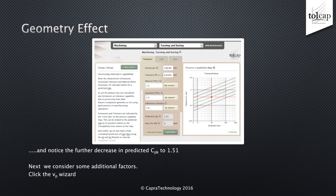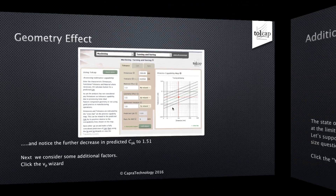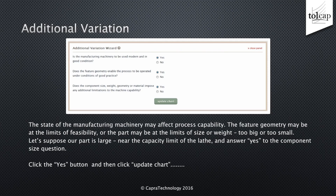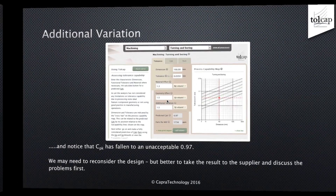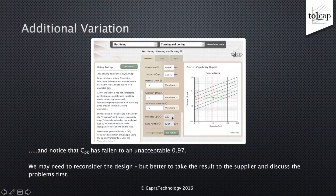We see the effect of the slender part and turning it around is to reduce the CPK prediction to 1.5, and we still have to consider some additional factors. Click the VP wizard, and we are presented with more questions. We would hope the manufacturing machinery is up to date and well maintained. The feature geometry may be at the limits of feasibility, or the part may be at the limits of size or weight — too big or too small. Suppose our part is not only slender but long, so it's large — near the capacity limit of the lathe. We answer yes to the question and press 'Update Chart'. Notice that the CPK has fallen to an unacceptable 0.97. Well, that's a tear-up then. Maybe, but not yet. We're predicting a low CPK, but we know the factors that cause the low value: the part is big and it's long and thin.